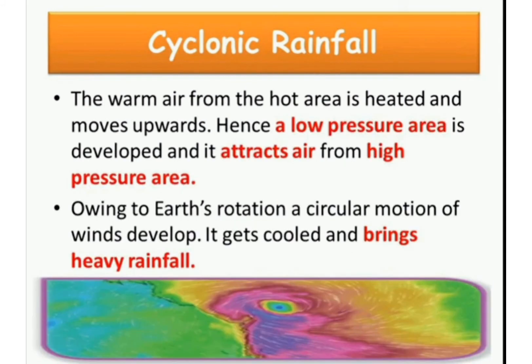Cyclonic rainfall: the warm air from a hot area is heated and moves upwards. Hence, a low pressure area is developed and it attracts air from a high pressure area. Owing to the earth's rotation, a circular motion of winds develops. It gets cold and brings heavy rainfall. This type of rainfall is known as cyclonic rainfall.